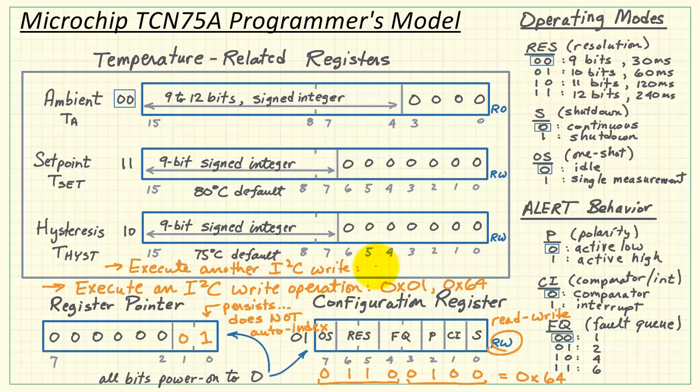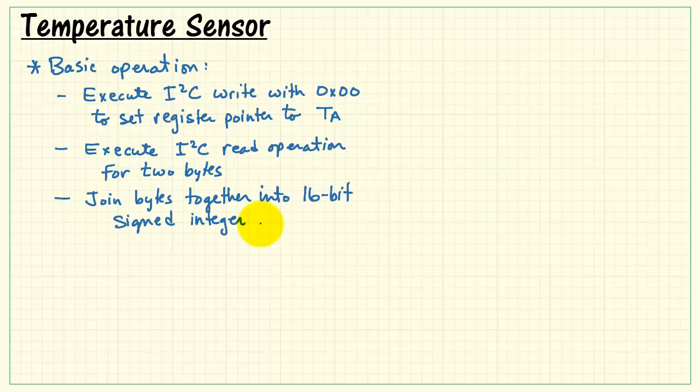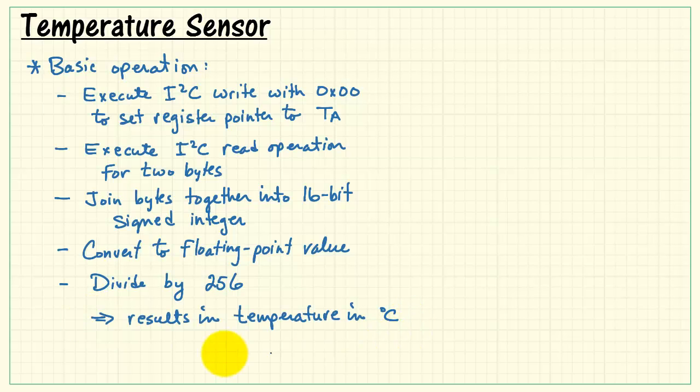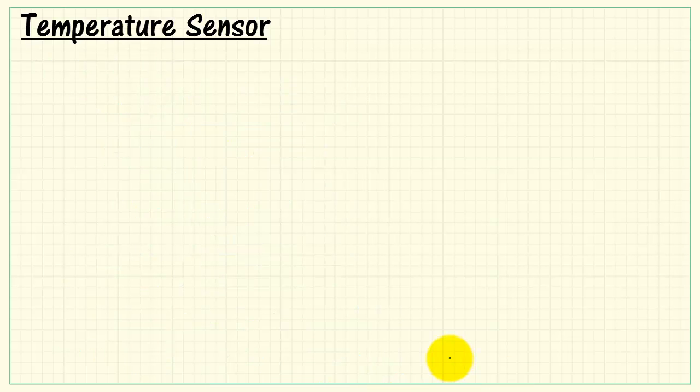To read the ambient temperature, you want to execute another I2C write and get the register pointer back to ambient temperature. Therefore, you would want to write out a 0 value. At this point, you are pointed at the ambient temperature register and ready to begin reading values. Here's the basic operation. Execute an I2C write with hexadecimal 0 to set the register pointer to the ambient temperature. Execute an I2C read operation for 2 bytes. Join these 2 bytes together into a 16-bit signed integer and then convert to floating point value. Divide by 256, and your result is the temperature in degrees C. You can read the ambient temperature register as often as you like, but be aware of the resolution setting. There's no reason to read it faster than the conversion time that you've selected.